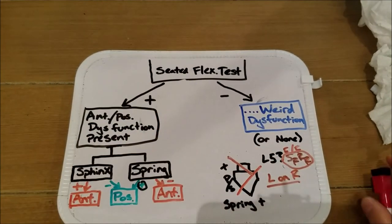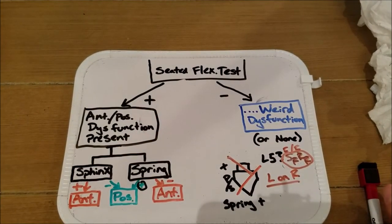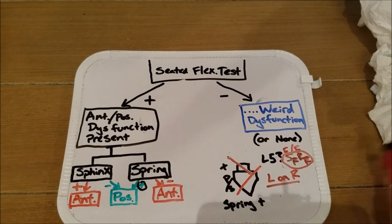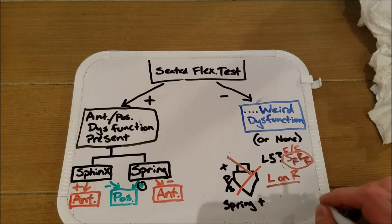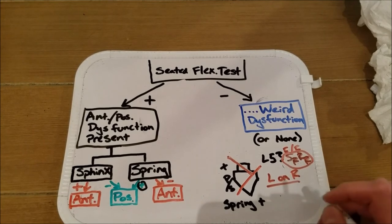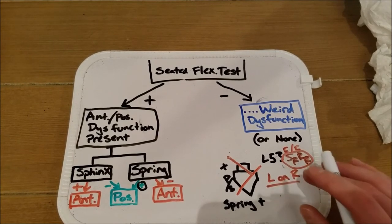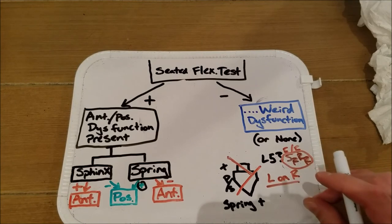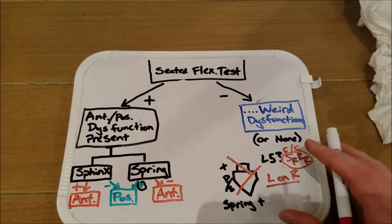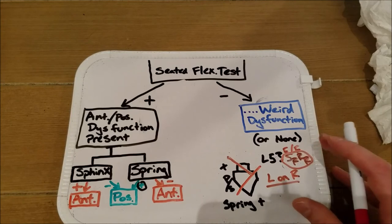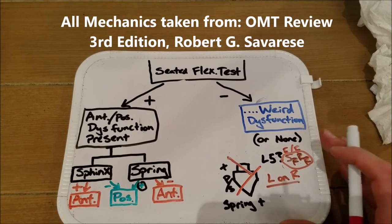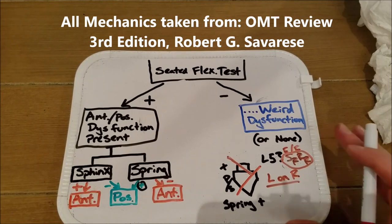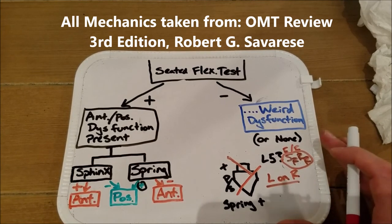A final word: there are other sacral dysfunctions that do not fit in with these rules, listed in Siebert's. These are very rare and confusing, and are beyond the scope of this video. Knowing the ones we talked about will get you through COMLEX Level 1 and COMLEX Level 2. Don't forget to like and subscribe for more OMM videos, and comment below if there are any other OMM concepts you would like to see walkthroughs on.